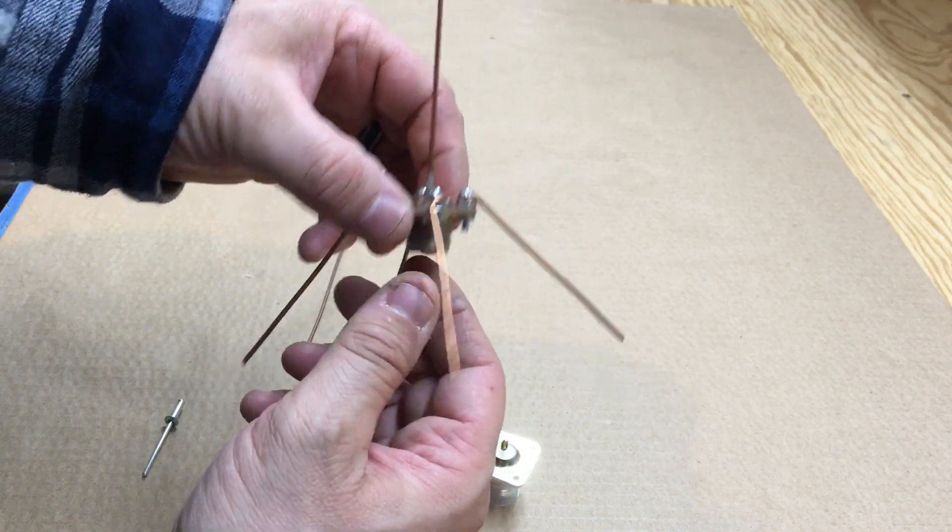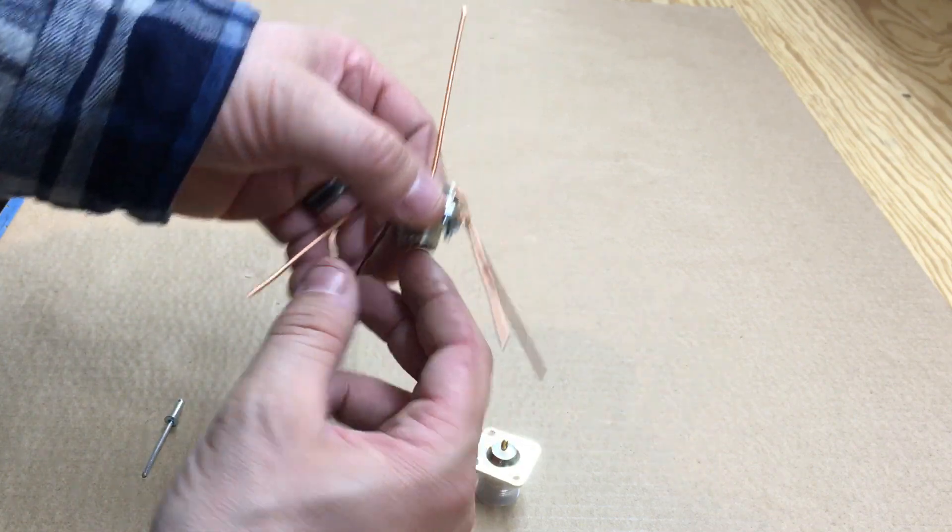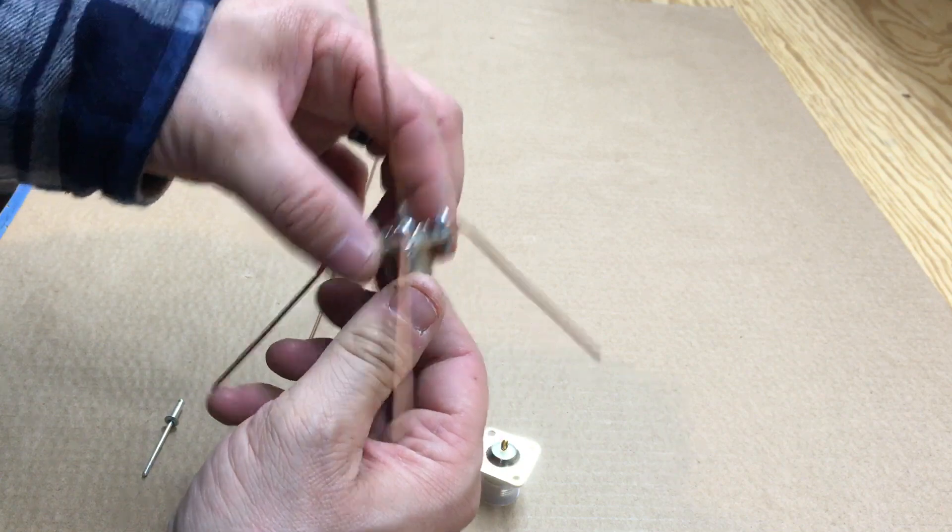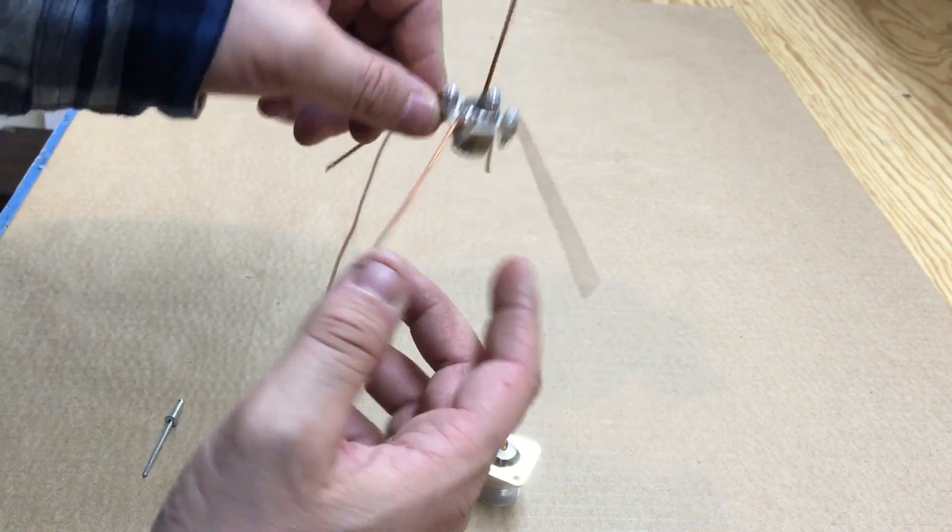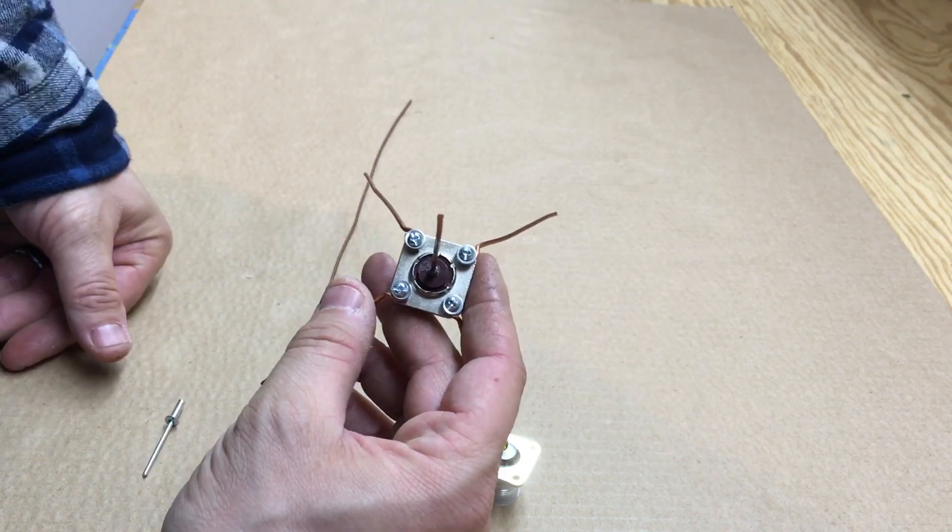You should be good to go for ADS-B. These spider antennas, these ground planes, work out pretty good. This is a four-leg. I did an eight-leg before. I think it works out pretty well.